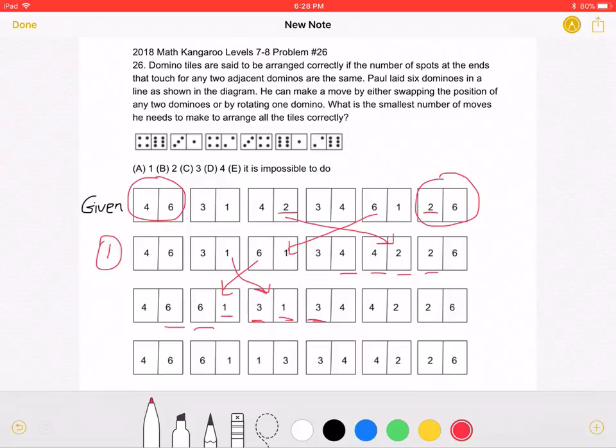If we read the problem again, we can see that we can also rotate the domino. Let's rotate this one in order to get 1, 3. This was our second move.